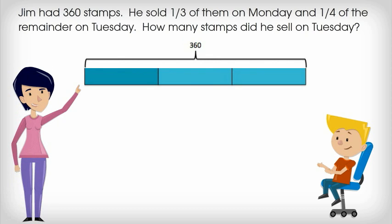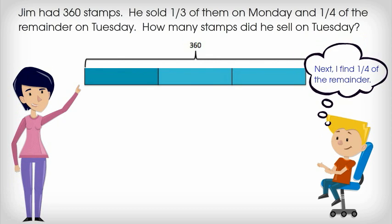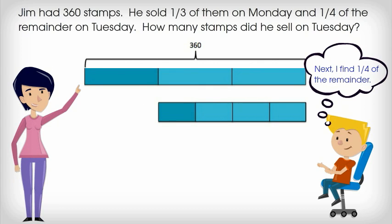Next, we have to find one fourth of the remainder. We already learned that the unshaded part, or two thirds, is the remainder. We know that Jim sold one fourth of the remainder on Tuesday. We can break the remainder into four equal parts. The shaded part, or one fourth of the remainder, is what Jim had left on Tuesday and can be labeled with our question mark. Now our bar model is complete and we can solve.